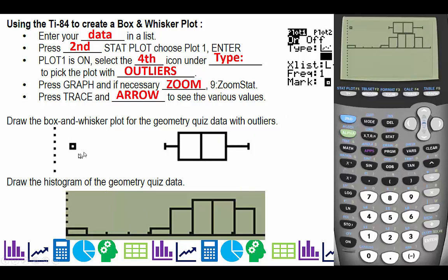First of all, outliers are beautifully identified in your box and whisker plot. And the histogram, in my opinion, is a great way to determine if something is unimodal or bimodal. You can look at the symmetry of it, and this also helps with the symmetry.